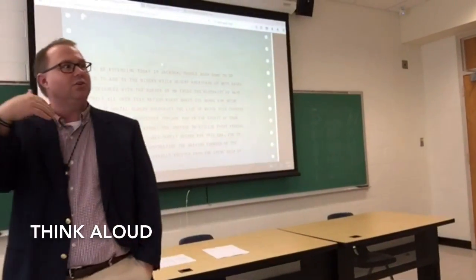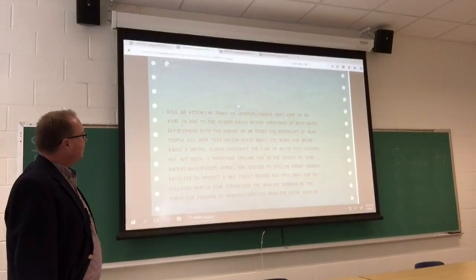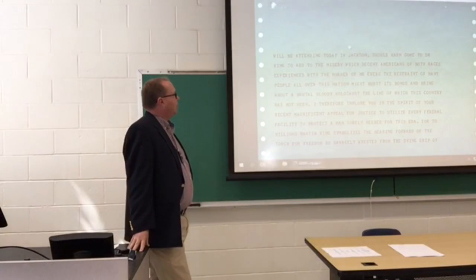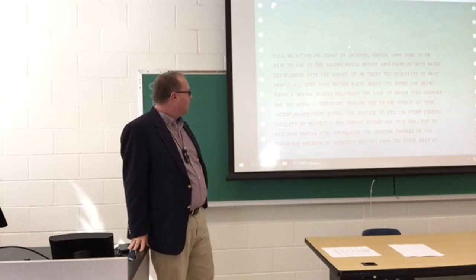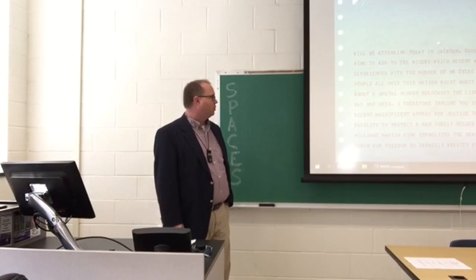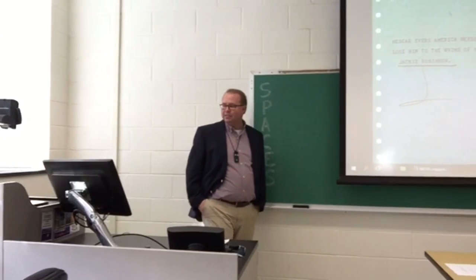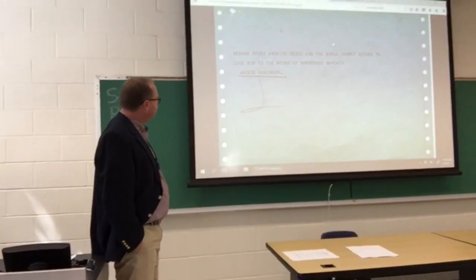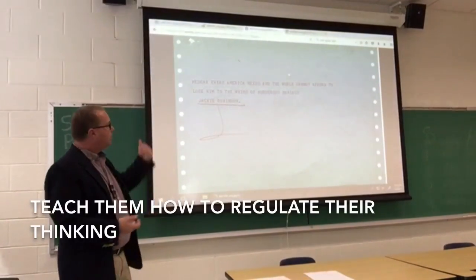There's a social evil that has occurred, and he's attending this tragic event. "Should harm come to Dr. King to add to the misery which decent Americans of both races experience with the murder of Mr. Evers, the restraint of many people all over the nation might burst its bonds and bring about a brutal, bloody Holocaust, the like of which this country has not seen. I therefore implore you, in the spirit of your recent magnificent appeal for justice, to utilize every federal facility to protect demands sorely needed for this era. For the millions, Martin King symbolizes the bearing forward of the torch for freedom, so savagely wrested from the dying grip of Medgar Evers. America needs and the world cannot afford to lose him to the whims of murderous maniacs. Jackie Robinson." So, do we want to revisit what this telegram is about now?